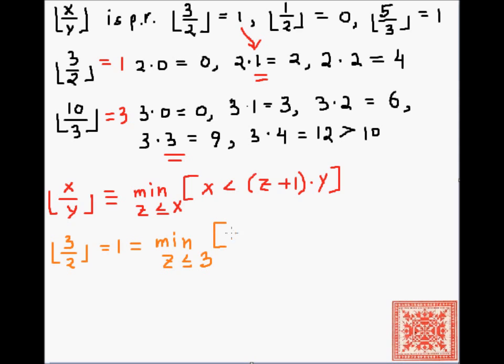So, the minimalization of z less than or equal to 3, such that 3 is strictly less than z plus 1 times 2. And z obviously is 1, because 1 plus 1 times 2, that's the denominator, is 4, which puts us strictly above 3.